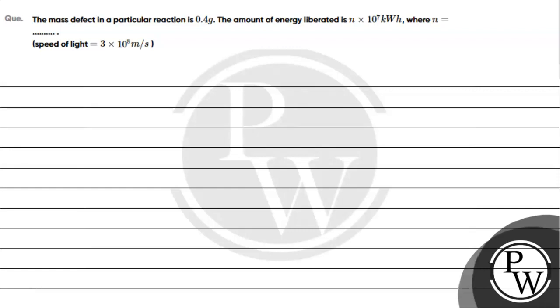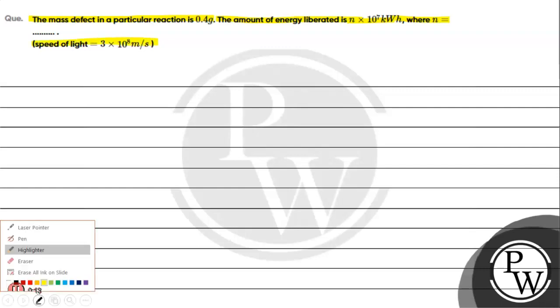Hello, let's get a given question. The question says the mass defect in a particular reaction is 0.4 gram. The amount of energy liberated is n into 10 raised to 7 kilowatt hour where n is to find. Speed of light we can take 3 into 10 raised to 8 meter per second.